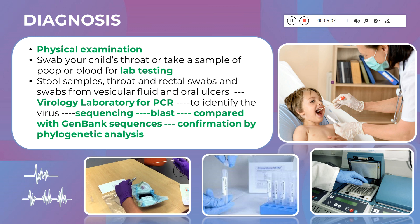Once sequencing is done, bioinformatics tools like BLAST can be used to compare the sequences with those already available in repositories such as GenBank. GenBank holds deposited sequences for known organisms, and you can compare your results to confirm if it is the same species that caused the infection. This confirmation using GenBank and bioinformatics tools is part of what is called phylogenetic tree analysis.